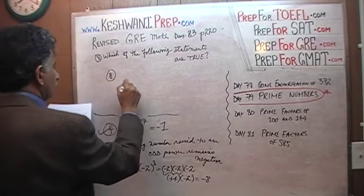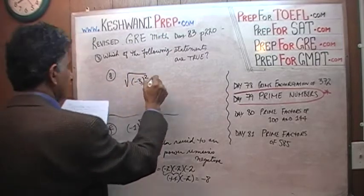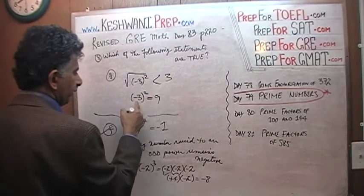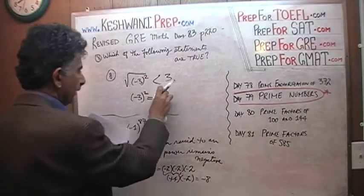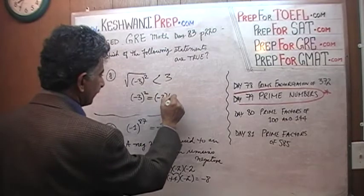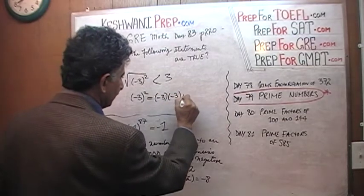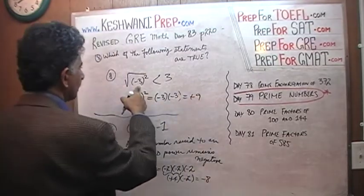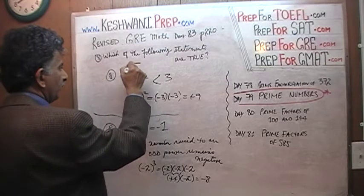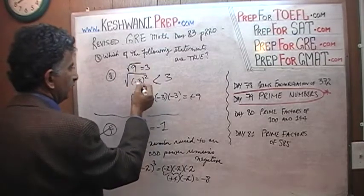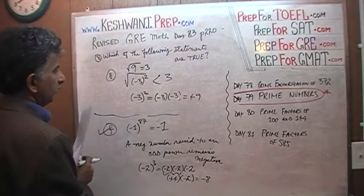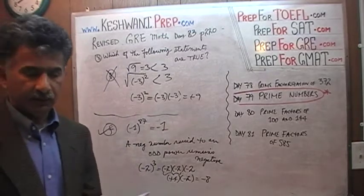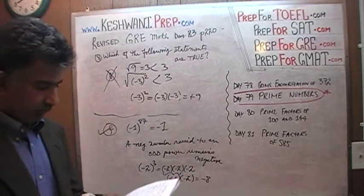Statement G says the square root of negative 3 squared is less than 3. How much is negative 3 squared? Negative 3 squared is the same as negative 3 times negative 3, which is positive 9. So we have the square root of positive 9, which equals 3. This is saying 3 is less than 3 — which of course is not true. 3 is not less than 3.